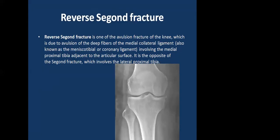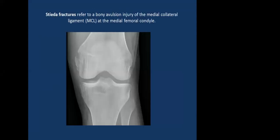Reverse Segond fracture is an avulsion fracture due to avulsion of the deep fibers of the medial collateral ligament, also known as the meniscotibial or coronary ligament, involving the medial proximal tibia adjacent to the articular surface — the opposite of the Segond fracture which involves the lateral proximal tibia. Stieda fracture refers to a bony avulsion injury of the medial collateral ligament at the medial femoral condyle.